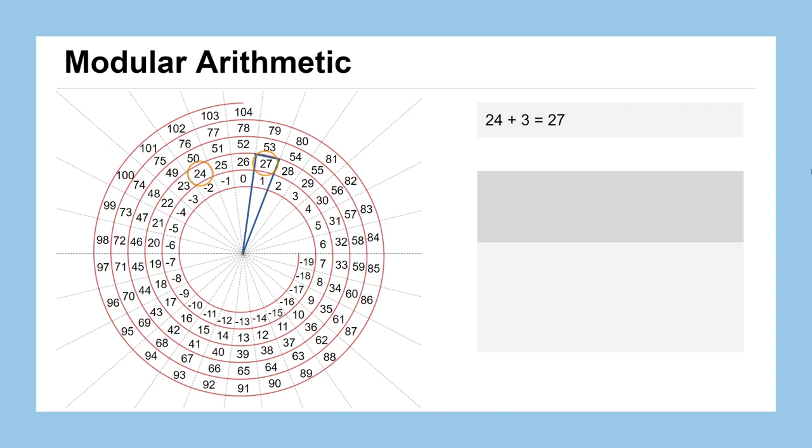And if we focus on this wedge where the 27 is, we could also say that 27 is equivalent to 1, or 53, or 79. All of those are equivalent numbers, but we have to specify that we're working in a number system that goes from 0 to 25. And the way that you would do that is we say we are working in a modulus of 26.